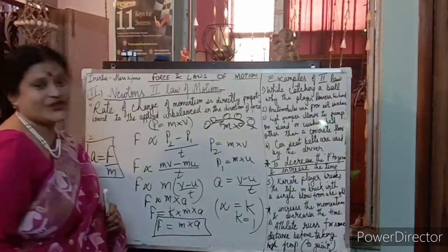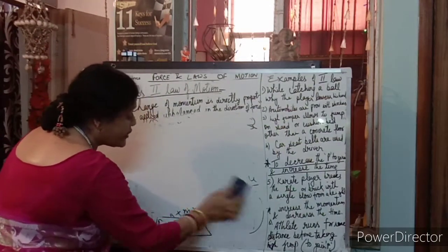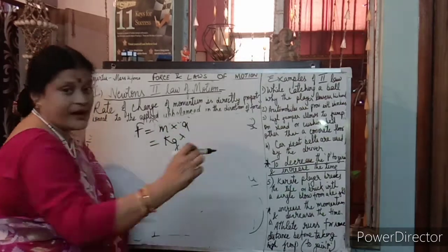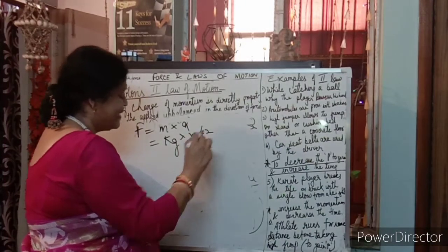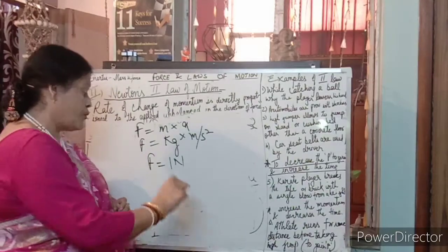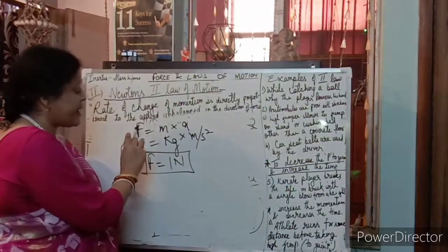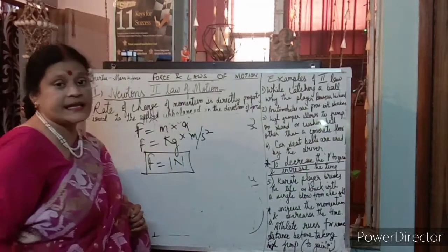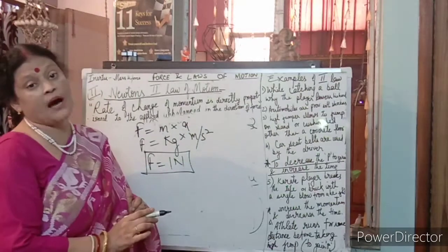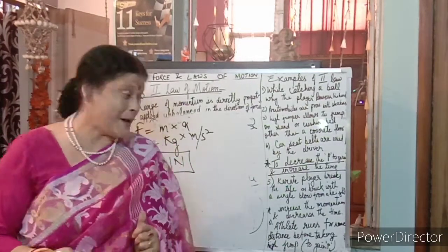What is one newton? If F = m×a, then mass is in kg and acceleration is in m/s². So the unit of force is kg·m/s², which we call one newton. One newton is the force applied on an object of mass 1 kg that produces an acceleration of 1 m/s².